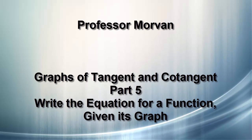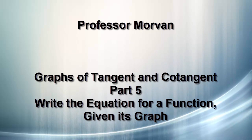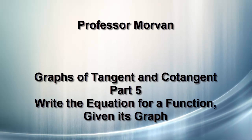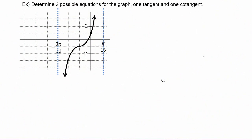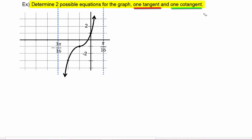In part five of our lesson on graphs of tangent and cotangent, you will learn how to write the equation for a function given its graph. In this example, we're being asked to determine two possible equations for the graph — one will be a tangent and one will be a cotangent.